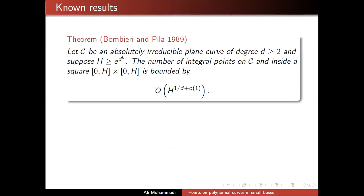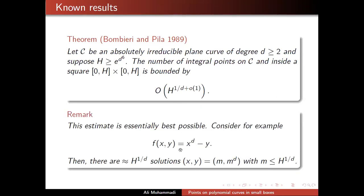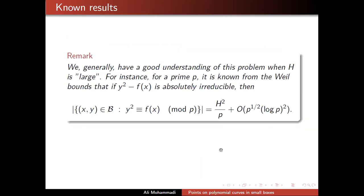Known results over Z: we have the famous result of Bombieri-Pila from 1989, which says that if C is an absolutely irreducible plane curve with degree d greater than two, and you have some largeness condition on h, then there is a bound on the number of rational points on this curve inside the box: h to the 1/d plus little-o(1). There is a very simple example showing this is asymptotically sharp — just take m going from 1 to h^(1/d) and your points being (m, m^d), giving h^(1/d) as a lower bound.